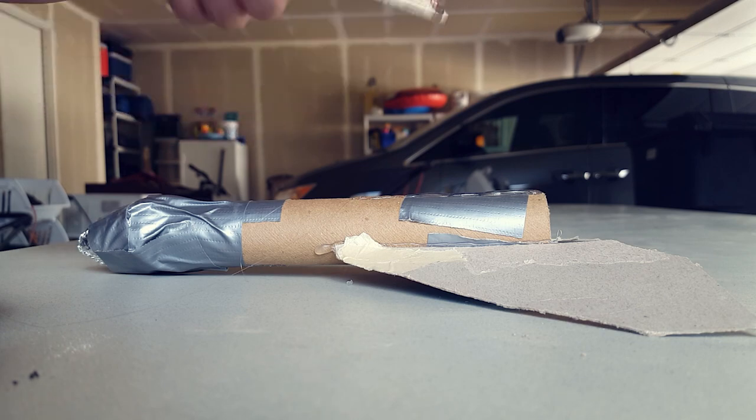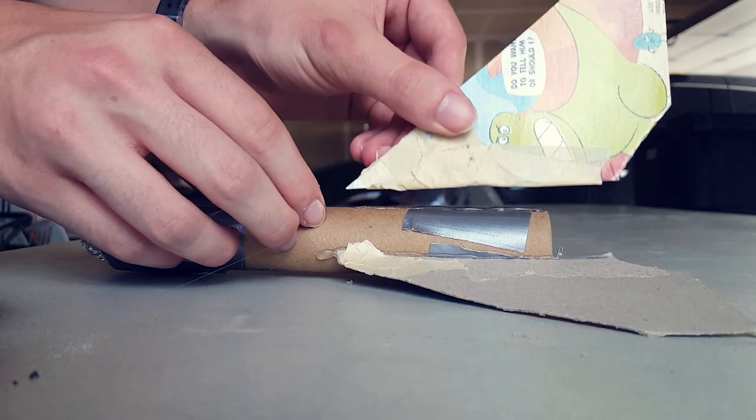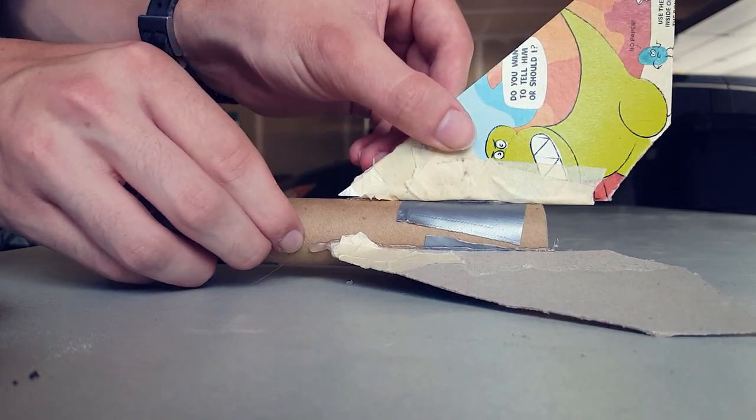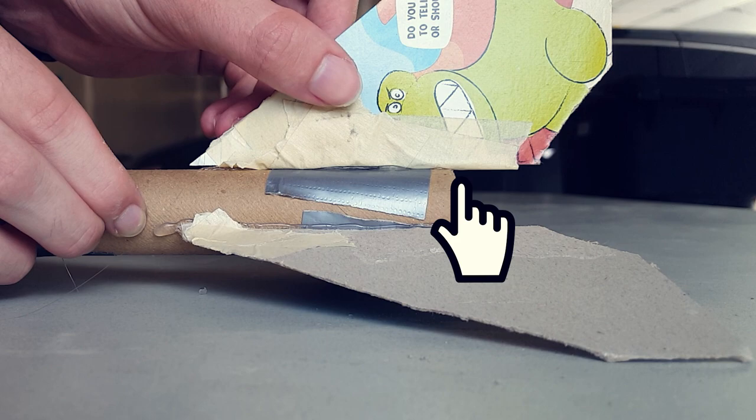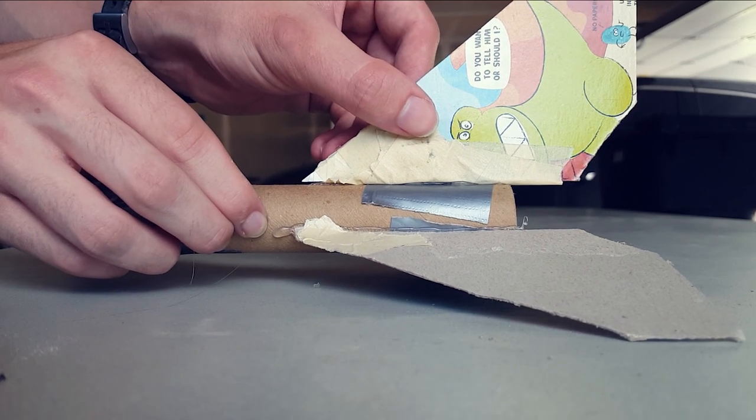Chances are the center of mass is still below the center of pressure, so we'll need to add wings. The wings need to be fairly large, and we also like to pull the wings backward so that they extend an inch or so beyond the end of the cardboard tube. That really helps put the center of pressure back as far as possible.